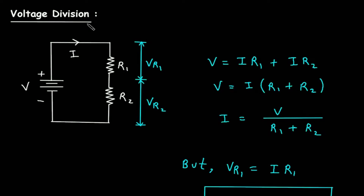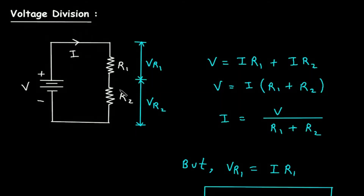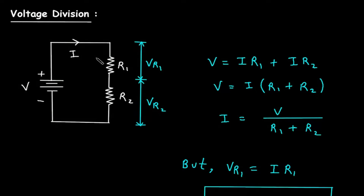Voltage division. Here we can see in this circuit, two resistors are connected in series. Let's say Vr1 is the voltage drop across resistor R1 and Vr2 is the voltage drop across resistor R2. V is the supply voltage and I is the total current.